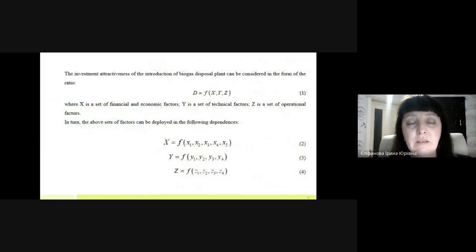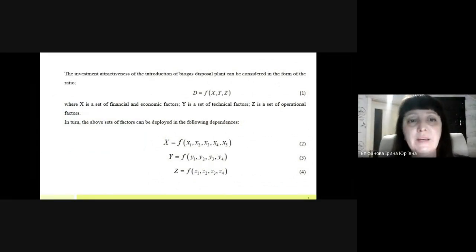The investment attractiveness of the production of biogas plant is proposed in the form as a ratio, where X is a set of financial and economic factors, Y is a set of technological factors, and Z is a set of operational factors. In turn, the above sets of factors can be deployed in the following dependencies as you can see on this slide.